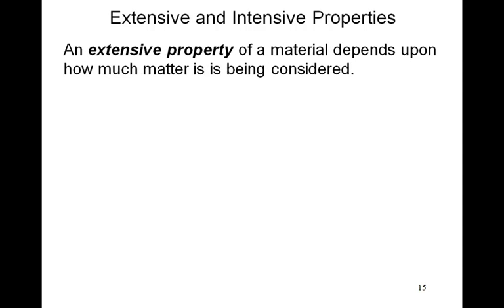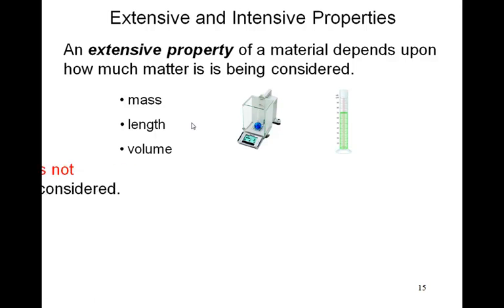Talking about substances, we're going to be talking about different properties. Properties are things that are characteristic of certain substances. Things that we measure in this class. An extensive property depends on how much matter is being considered. An example of an extensive property would be mass. How much matter or how much of a certain sample that you have is going to dictate the mass of that sample. Length, volume, other examples.